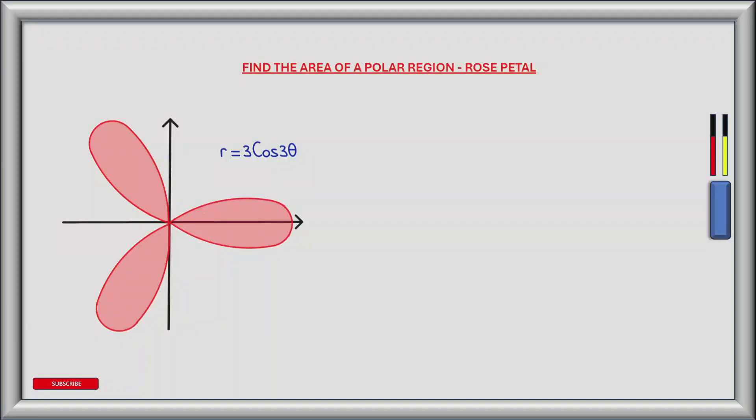Now that we have a better understanding of our region, let's look at how we find its area. To find the area across a polar region r we take a double integral which effectively sums infinitesimally small slices of area dA. This translates to an inner integral in the r direction between two values of r, and an outer integral which rotates about theta between two values of theta. The infinitesimally small pieces of area are defined by r dr d theta.